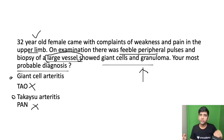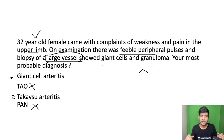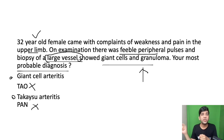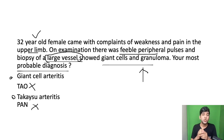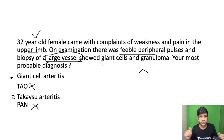Both giant cell arteritis and Takayasu arteritis will involve all the large vessels in the body. Giant cell arteritis can involve the subclavian artery, and if it does, it can present with feeble peripheral pulses — yes, that's possible.